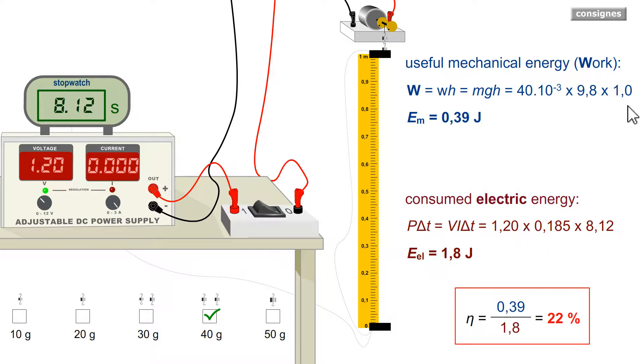Here it is 1 meter. Here it is 9.8 newtons per kilogram or meter per second squared. And the mass here 40 times 10 to the minus 3 kilogram. So 22%. The efficiency is less.